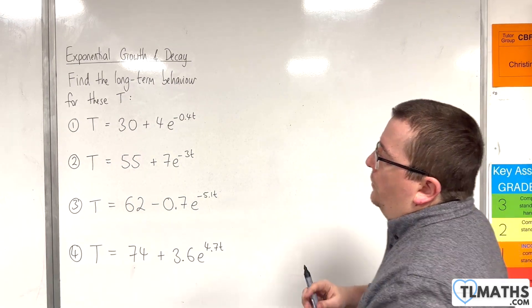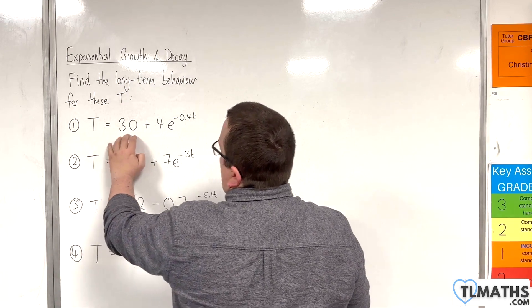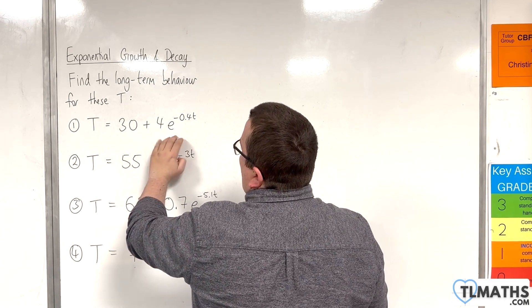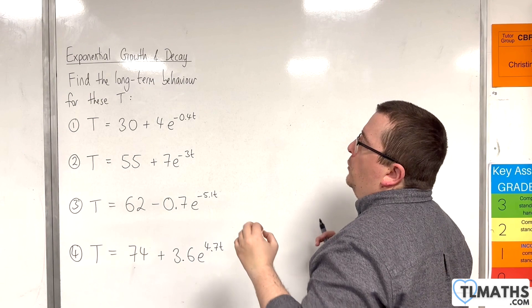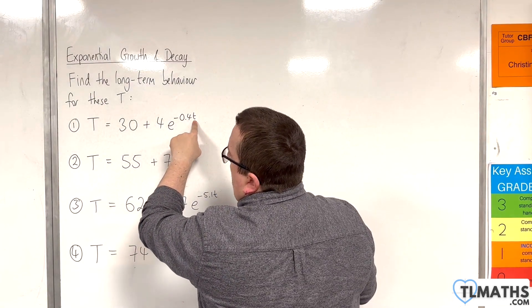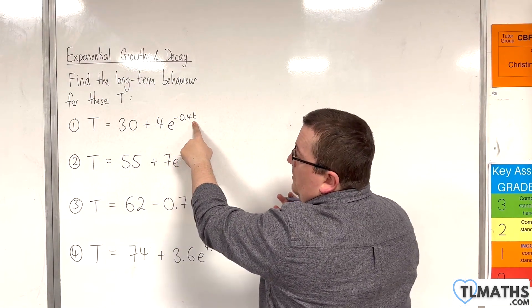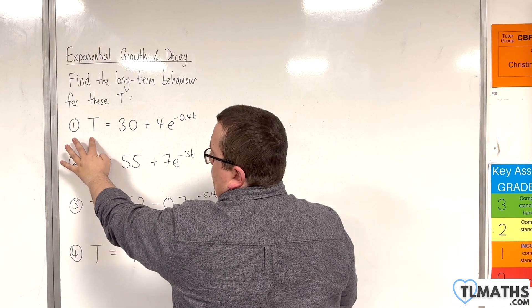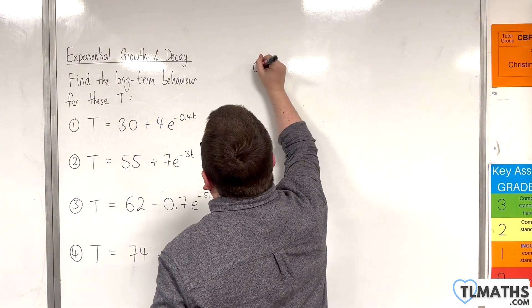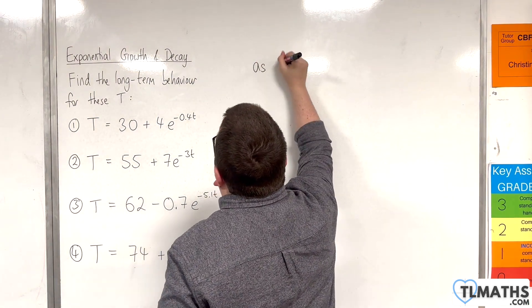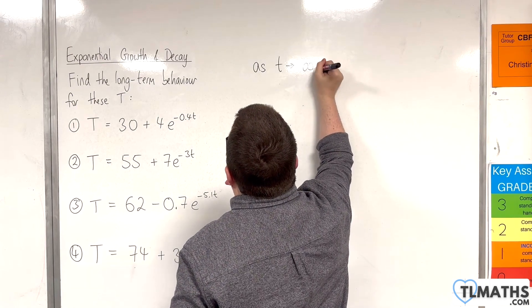So, let's take a look at the first one. We've got capital T is 30 plus 4e to the minus 0.4t. Lowercase t here is potentially representing time and capital T, temperature. In each of these cases, long-term behaviour — we're looking at as t tends to infinity.